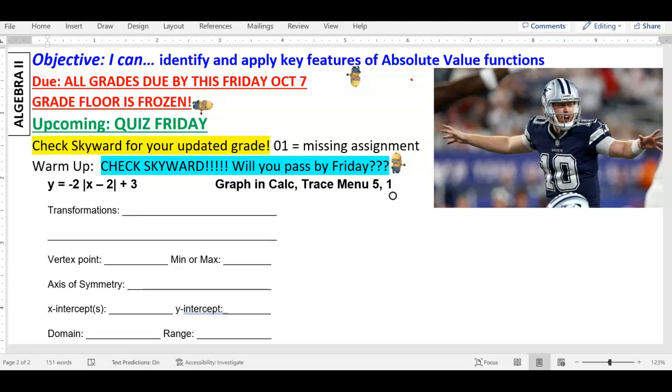For transformations, I do want to see if you can graph this on the calculator in a second, but for now we're just going to describe the transformations. I see four things that we can describe. Let's start off with the very first thing. What does that negative mean? What's going to happen?